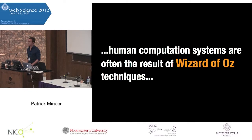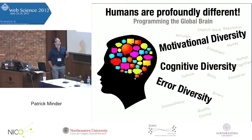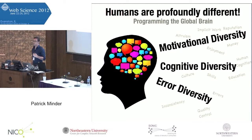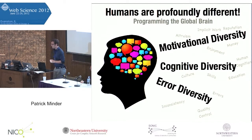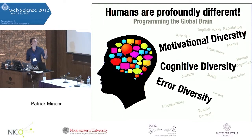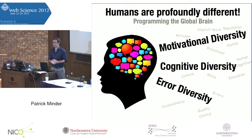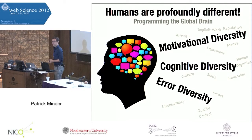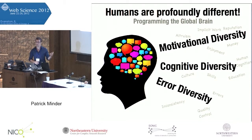For me as an engineer, that's quite difficult. It's especially difficult to understand how humans work. Humans are profoundly different than machines — they work because of different motivations such as joy, altruism, or money. There is a large cognitive diversity among humans; some are better educated or not. We have different cultural backgrounds, which is important for a lot of questions. And last but not least, if I have to solve a complex mathematical problem, I will possibly do that better in the morning than in the evening because I'm tired and will produce more errors. A computer never gets tired and always provides the correct answer, but therefore it cannot answer all questions.